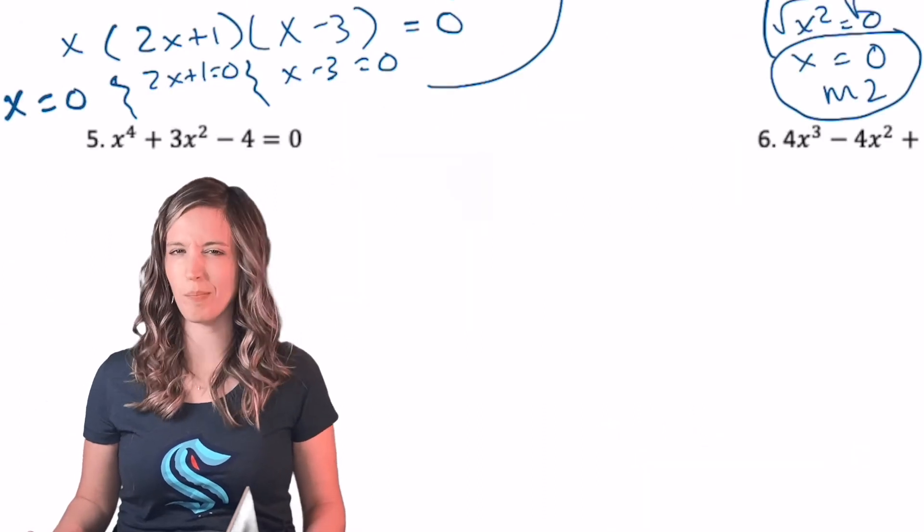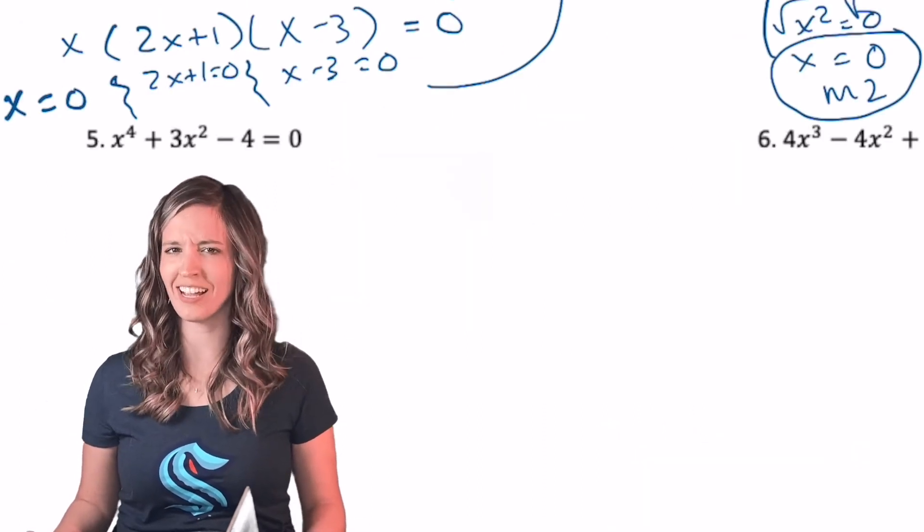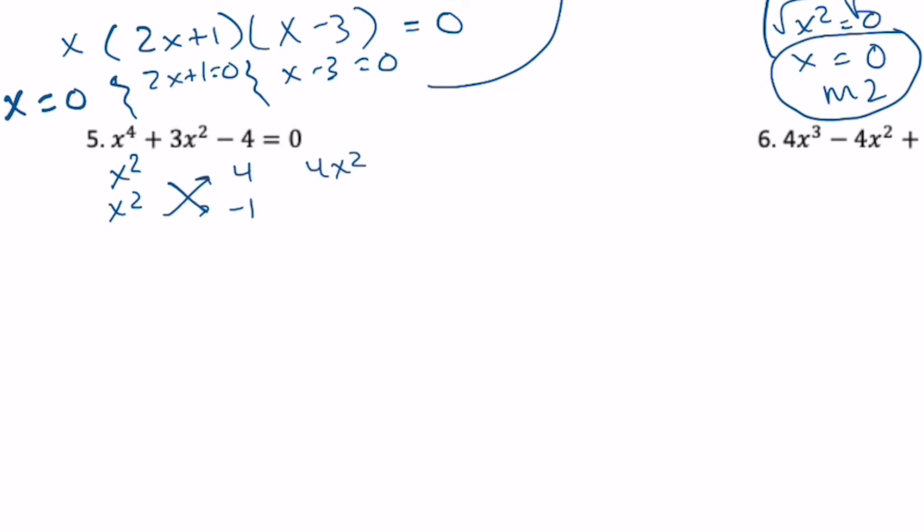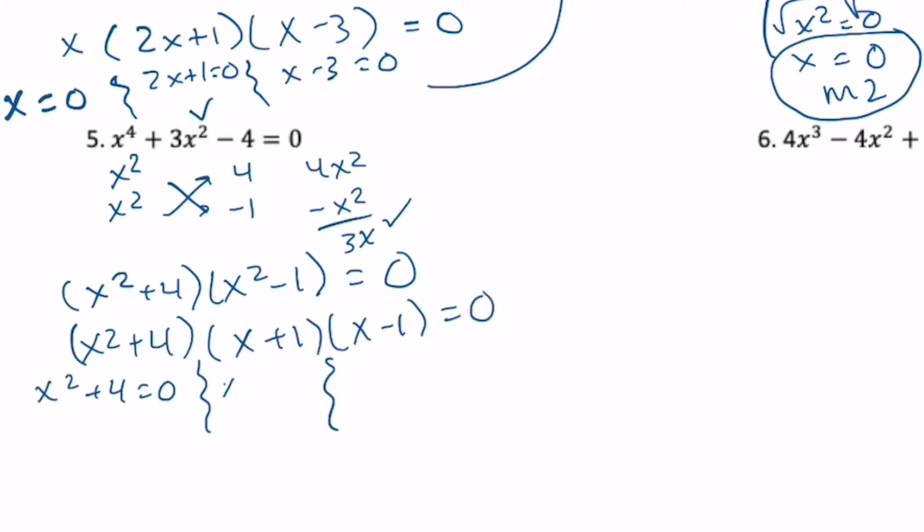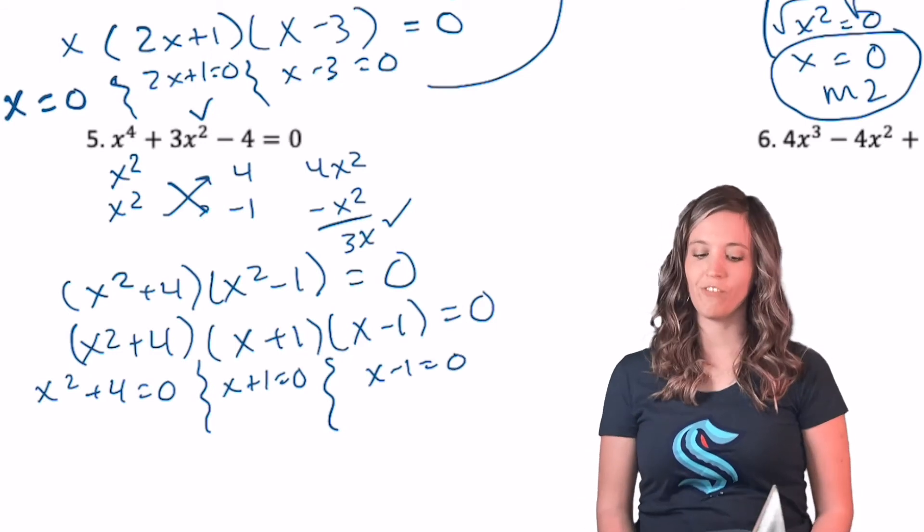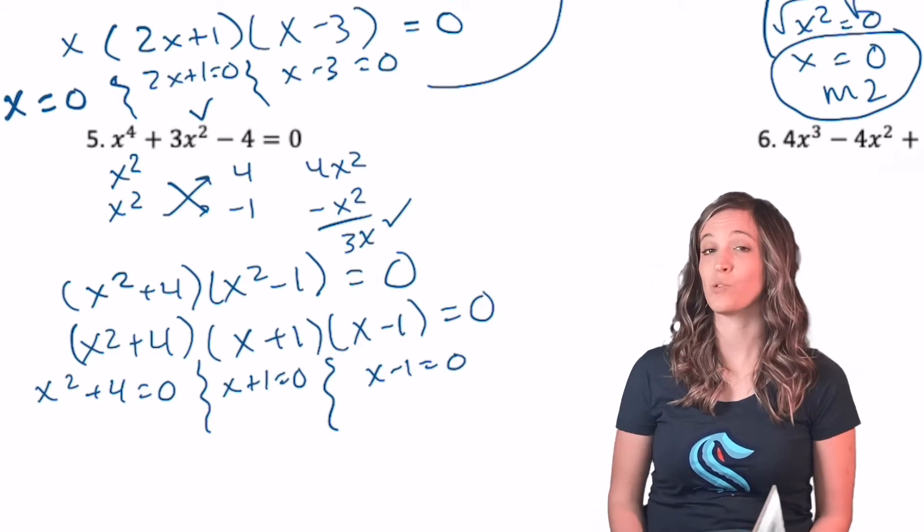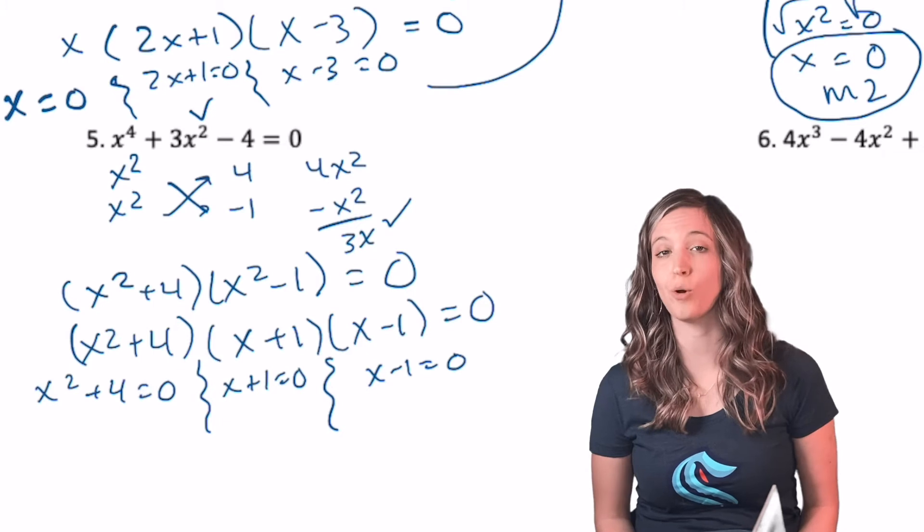Look at number five. It's a quartic, but this one's just quadratic style. Get cracking. Once I have it fully factored at X squared plus four, X plus one, X minus one, then I can use zero product property.